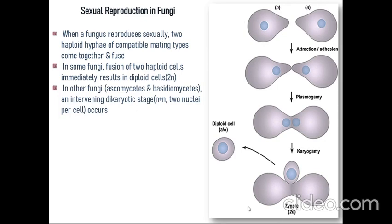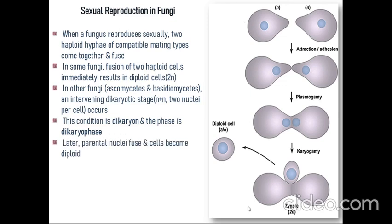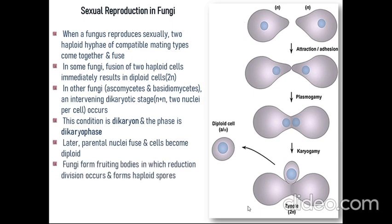In other fungi like ascomycetes and basidiomycetes, an intervening dikaryotic stage occurs, which is the n+n two-nuclei per cell stage. This condition is called dikaryosis and the phase is the dikaryophase. This is a transition phase. Later, the parental nuclei fuse and cells become diploid. Fungi then form fruiting bodies in which reduction division occurs and haploid spores are formed.